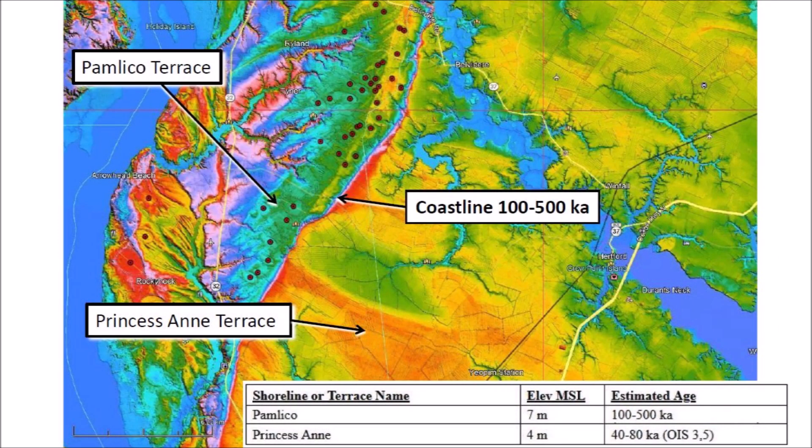This image shows a portion of the eastern part of North Carolina near the Virginia border. The Pamlico Terrace at an elevation of 7 meters above sea level has many Carolina Bays, but the Princess Anne Terrace at 4 meters above sea level does not have any bays at all. The Pamlico Terrace has an estimated age of 100 to 500,000 years, and the Princess Anne Terrace has an estimated age of 40 to 80,000 years. The logical conclusion seems to be that at one time all the surface in this image was covered with Carolina Bays prior to 100,000 years ago, but when the sea level increased and covered the Princess Anne Terrace 40 to 80,000 years ago, all the bays in this terrace were eroded.